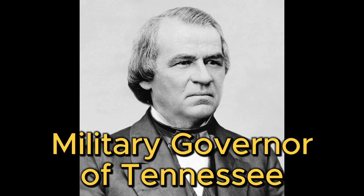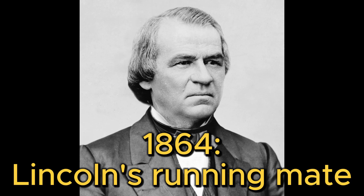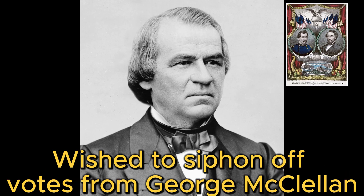After the Union took control of Tennessee, Lincoln made Johnson its military governor. In 1864, the Republican Party, now known as the National Union Party, put Johnson on the ticket as Lincoln's running mate. Lincoln was concerned that he would not win re-election, so putting a Southern Democrat on the ticket would help siphon off votes from his Democratic rival, George McClellan. The concerns were unwarranted since Lincoln easily won re-election.